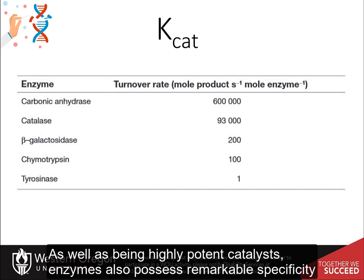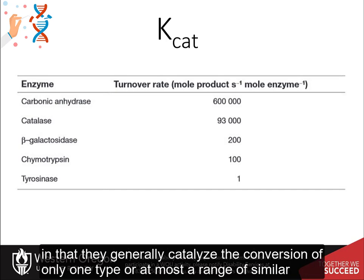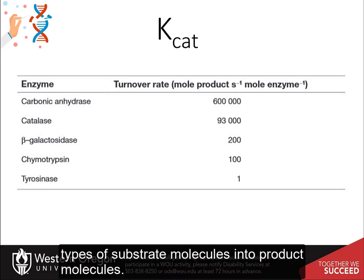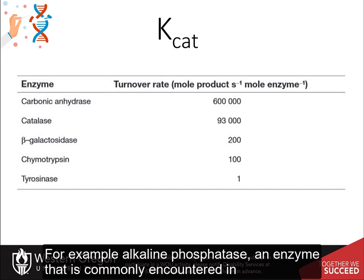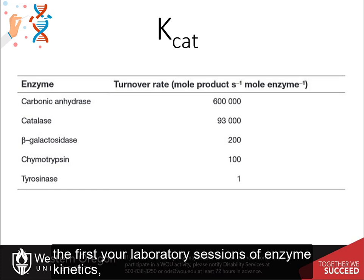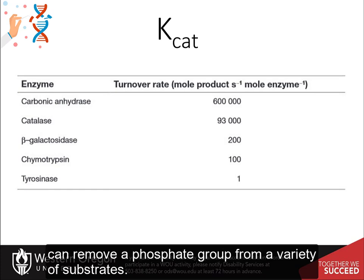As well as being highly potent catalysts, enzymes also possess remarkable specificity in that they generally catalyze a conversion of only one type, or at most a range of similar types of substrate molecules, into product molecules. Some enzymes demonstrate group specificity. For example, alkaline phosphatase, an enzyme commonly encountered in first-year laboratory sessions of enzyme kinetics, can remove a phosphate group from a variety of substrates.